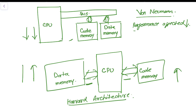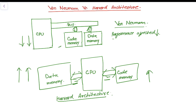The Harvard architecture, keeping other factors constant, has a higher price since it involves more hardware complexity and more number of buses to access the code memory and data memory separately. So this is all about this video, in which we discussed the difference between Von Neumann architecture and Harvard architecture, their advantages and disadvantages. Thank you so much for watching. Please do not forget to subscribe to this channel so that you can get updates directly into your inbox.